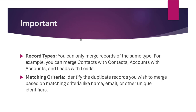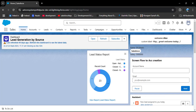Before merging records, there are important rules to follow. You can only merge records of the same type — contacts with contacts, accounts with accounts, and leads with leads. You cannot merge contacts with accounts or accounts with leads. There are also matching criteria to identify duplicate records, such as name, email, or other unique identifiers.